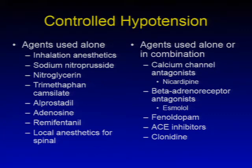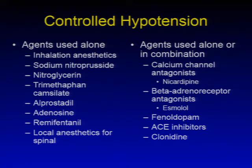Agents used alone for controlled hypotension include inhalation anesthetics, sodium nitroprusside, nitroglycerin, trimethophan camsulate, alprostadil, adenosine, remifentanil, and local anesthetics for spinal anesthetics.